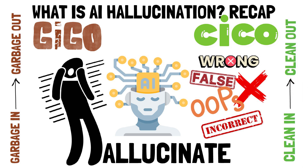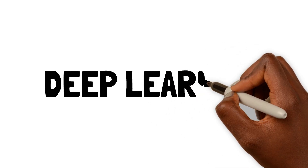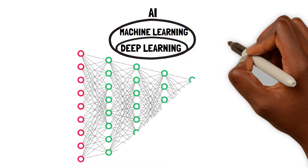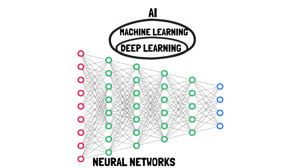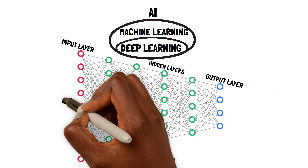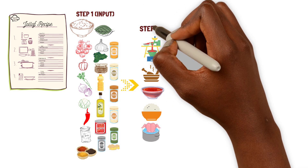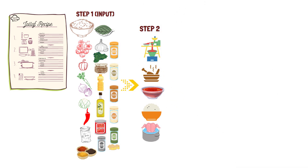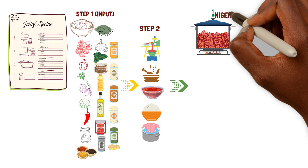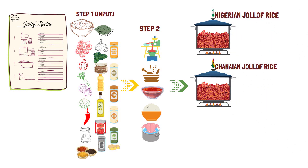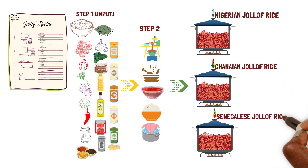In our first cooking session, we introduced the concept of deep learning, a subset of machine learning where we use neural networks with multiple layers to process and understand data. These neural networks are like our advanced recipes with many steps. With our advanced recipes, we can make different Jollof Rice dishes like Nigerian Jollof Rice, Ghanaian Jollof Rice, and Senegalese Jollof Rice, depending on the type of rice we use.